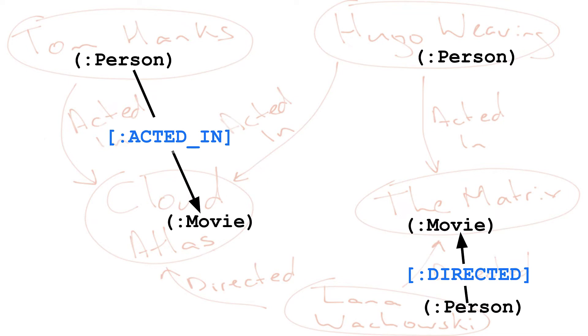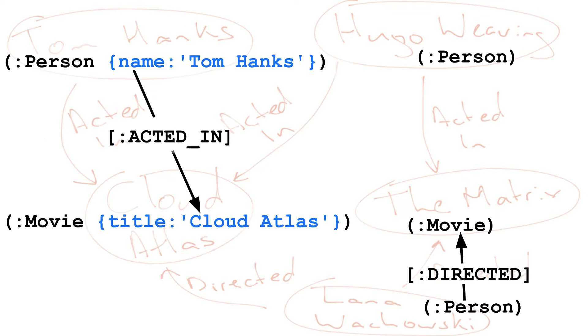Both nodes and relationships can contain properties. The properties are typically used to represent the data in the graph. When you create a node, you can specify a property for that specific node. In many cases, you define a particular property that will be used to uniquely identify a node with a specific label.